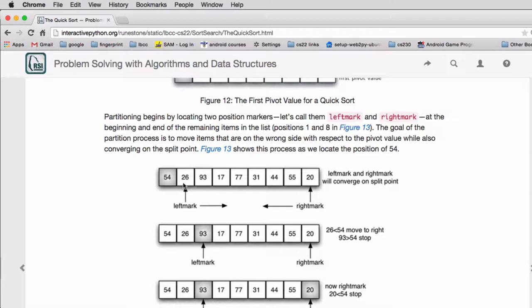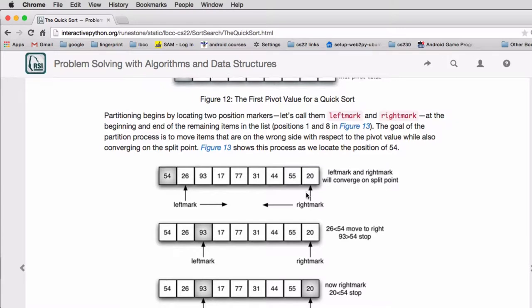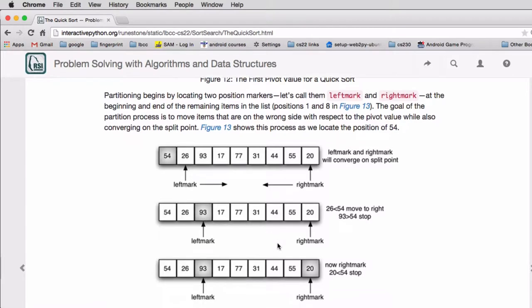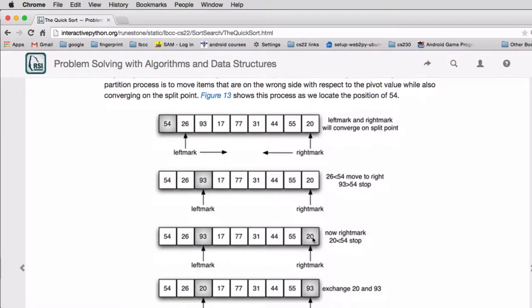So what we want to see is we want to see what is out of order. So everything to the left of the list we want to be less than 55. And everything to the right mark we want to be greater than 55. So we look at 26, we see that's less than 54, so that's okay. So we move the left mark. And then we look at the right mark and we see it's less than 54, so it's in the wrong place.